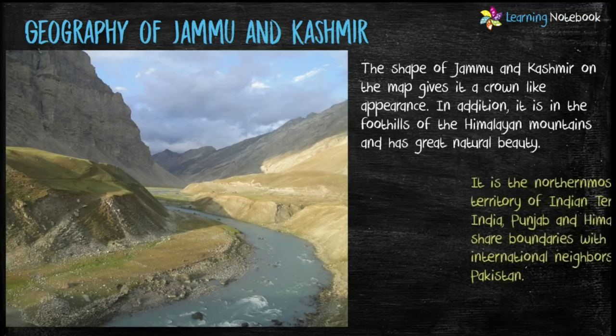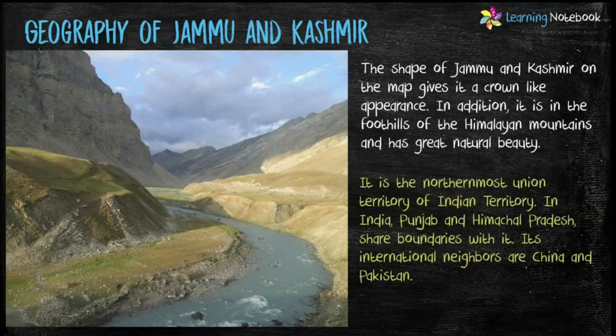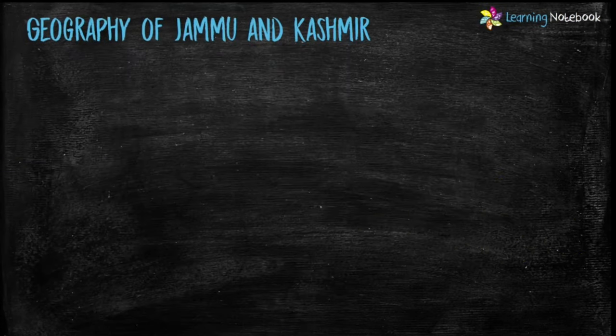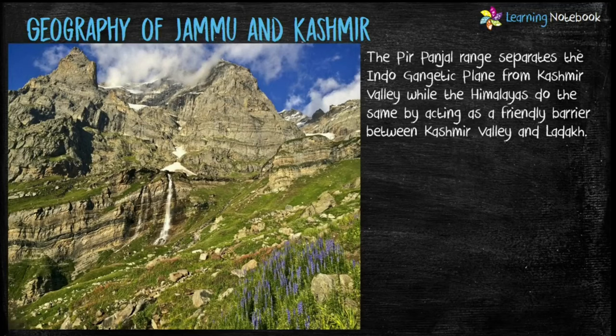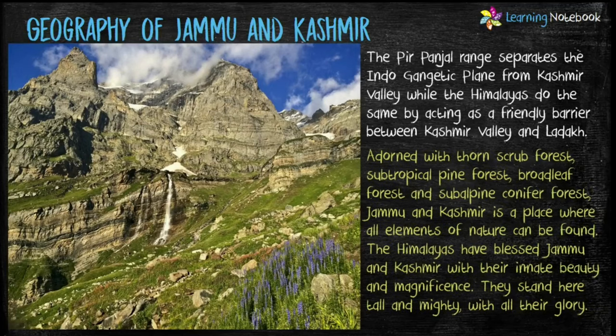Jammu and Kashmir is the northernmost union territory of India. It is in the foothills of the Himalayan mountains and has great natural beauty. It shares boundaries with Punjab and Himachal Pradesh in India, while its international neighbors are China and Pakistan. The Pir Panjal range separates the Indo-Gangetic plain from Kashmir valley, while the Himalayas act as a barrier between Kashmir valley and Ladakh. Jammu and Kashmir is a place where a lot of sub-tropical pine forests, thorn forests, etc. are found.